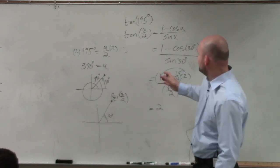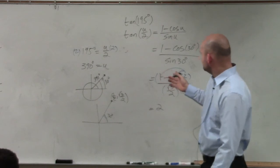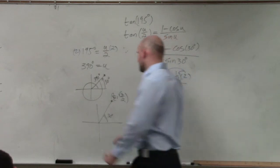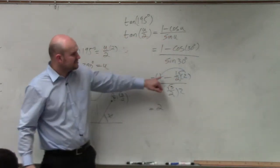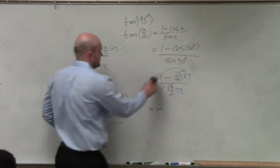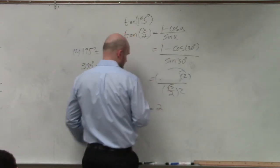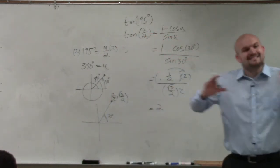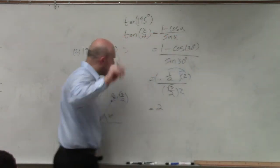1 minus cosine of u. Cosine of u. Oh, I can just subtract this, right? So why don't we just subtract that. I did it again. I knew I was wrong. Thank you.